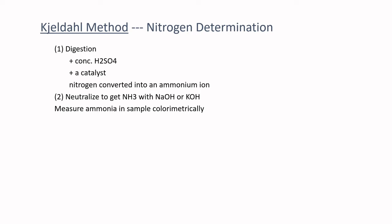In the Kjeldahl method, we're digesting the product using concentrated sulfuric acid and a catalyst — usually a nickel catalyst — and we're converting all those amino acids and the free nitrogen into ammonium ion. Amino acids are derived from ammonium. We're then neutralizing with sodium or potassium hydroxide to get ammonia, and then titrating to measure the quantity of ammonia in the sample using a colorimetric titration.